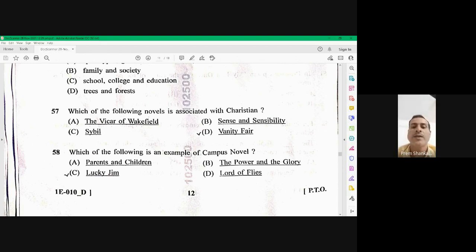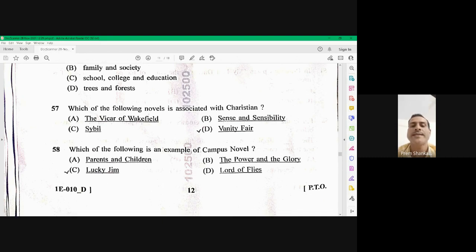Question number 58. Which of the following is an example of campus novel? So as you know, it's Lucky Jim. C is the right option. Question number 58 is C.